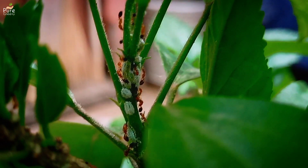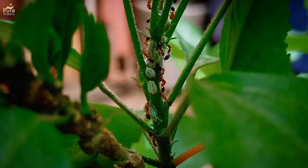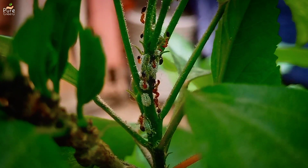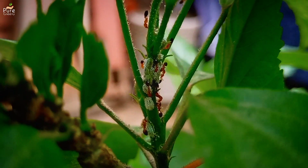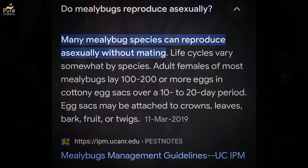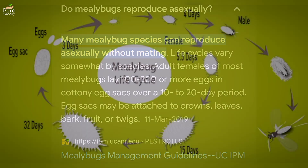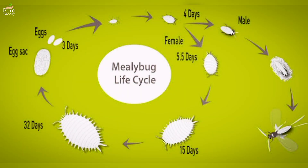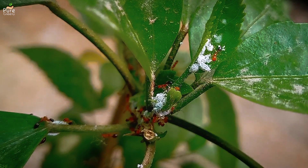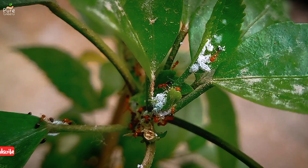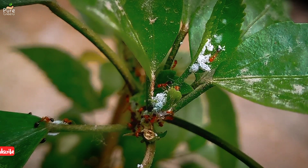Mealybugs are found worldwide and can survive in various climatic conditions, and this makes them even more powerful and destructive for plants. Mealybugs can also reproduce asexually, meaning a male is not always required by the female to reproduce. This can further aid their spreading, which is why mealybugs can become really harmful if not treated timely.